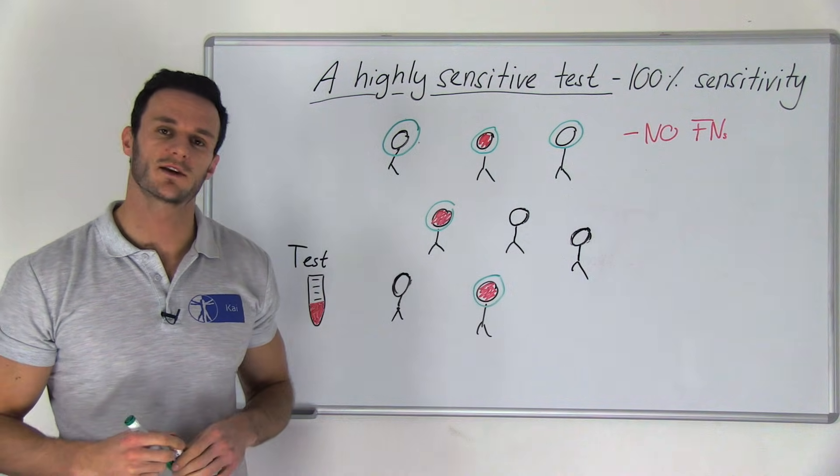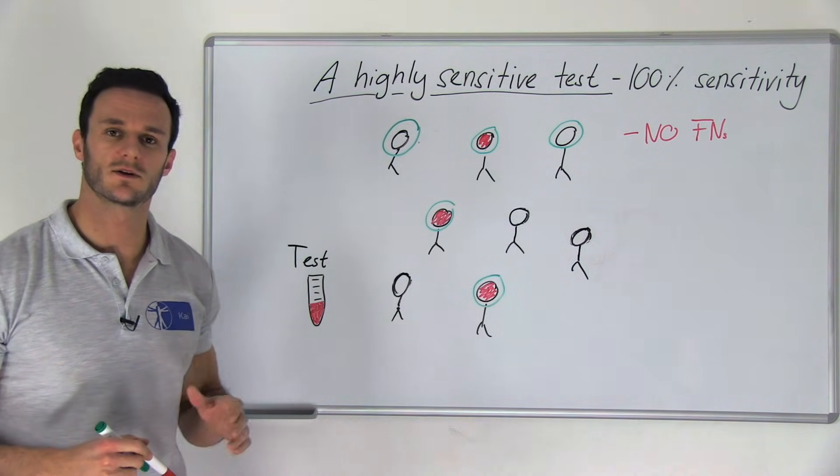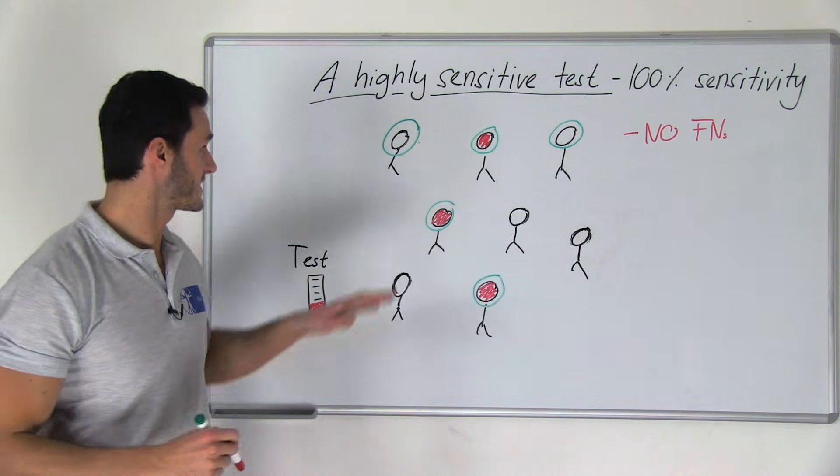SNOUT, like in the snout of an animal, in this example here is the mnemonic that you should remember. Maybe you have already discovered the problem in the example from before. We have two people who were diagnosed as positive but who are actually healthy.